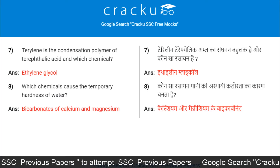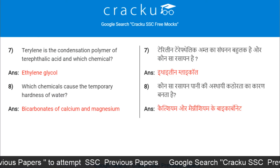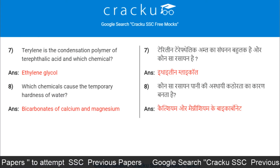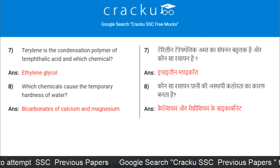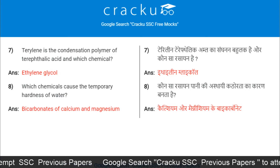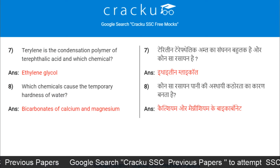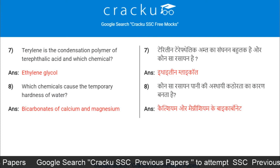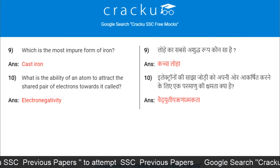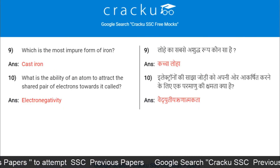Terylene is the condensation polymer of terephthalic acid and which chemical? Ethylene glycol. Which chemicals cause the temporary hardness of water? Bicarbonates of calcium and magnesium.